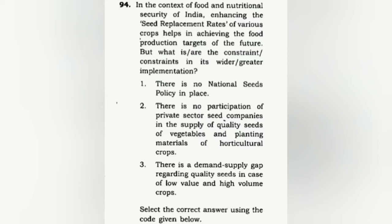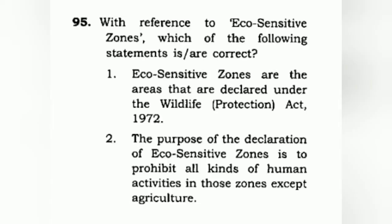In the context of food and nutritional security of India, enhancing the seed replacement rates of various crops helps in achieving food production targets. What are the constraints? There is no national seeds policy in place, no participation of the private sector seed companies in the supply of quality seeds, and a demand-supply gap regarding quality seeds. Only the demand-supply gap is identified as the correct constraint. The correct answer is B: three only.